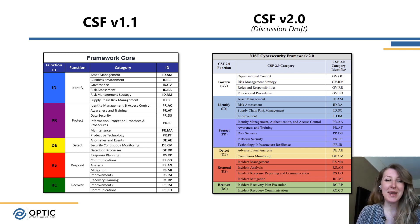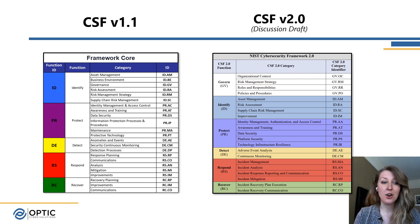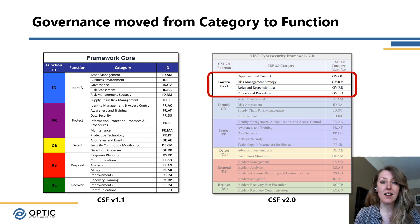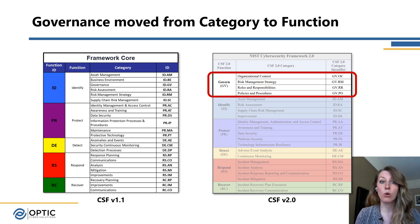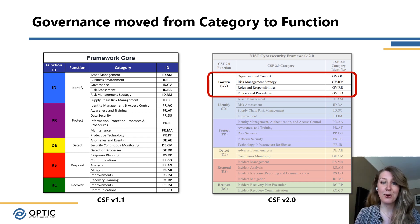Here I've blown them up to make them easier to read, and we can see the core side-by-side with 1.1 and 2.0. The Govern function has four categories: organizational context, risk management strategy, roles and responsibilities, and policies and procedures. If you're familiar with 1.1, these aren't new concepts — it's really pulling those out of other areas of the framework, largely from Identify, and highlighting them as very important to the organization, as a place to get started.